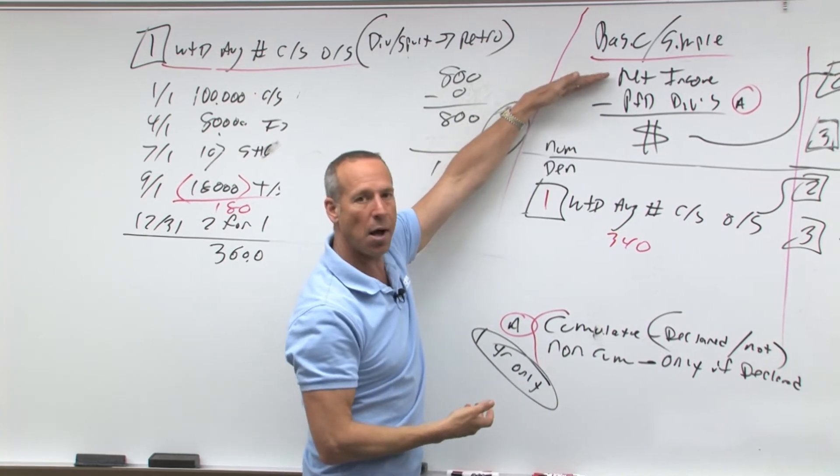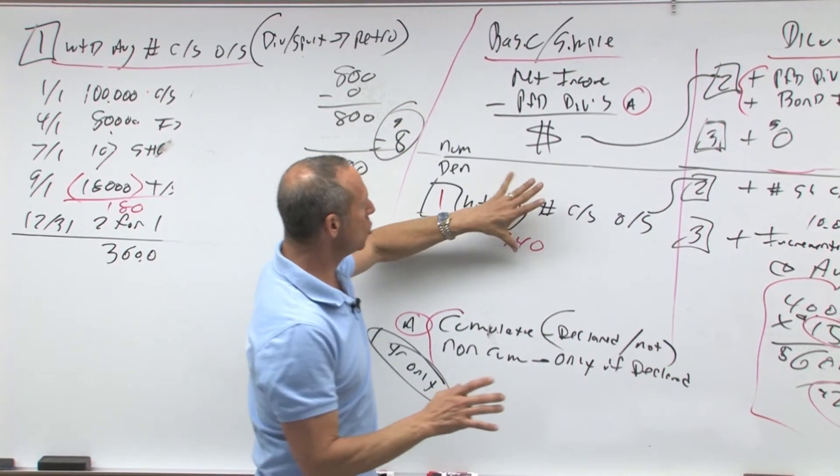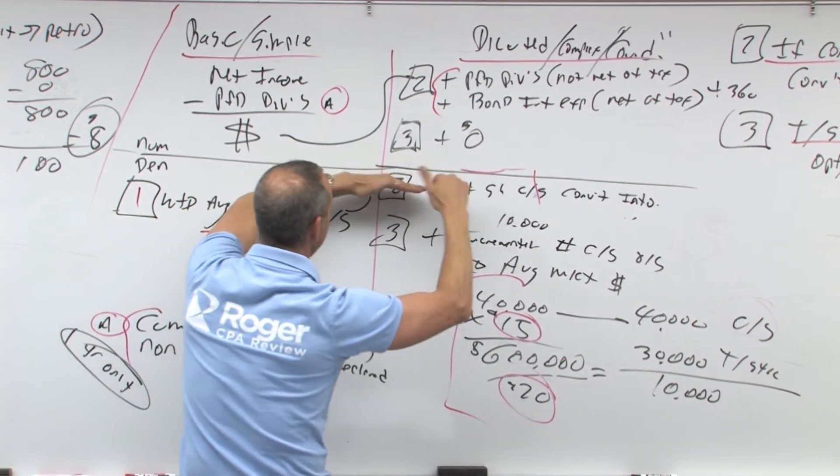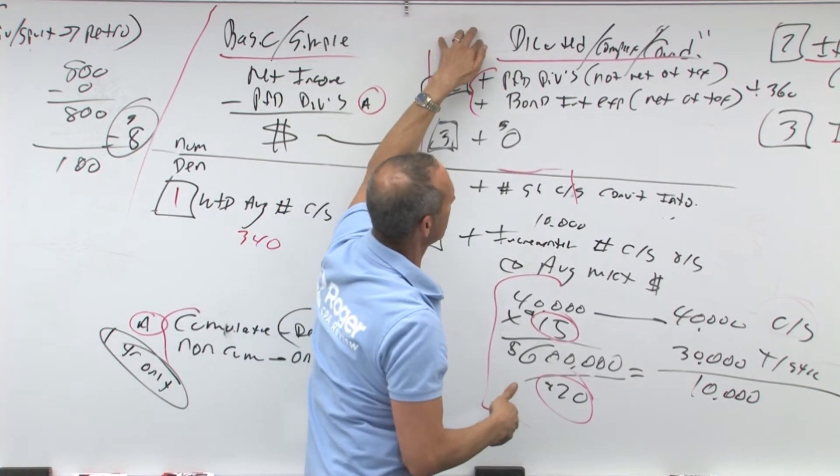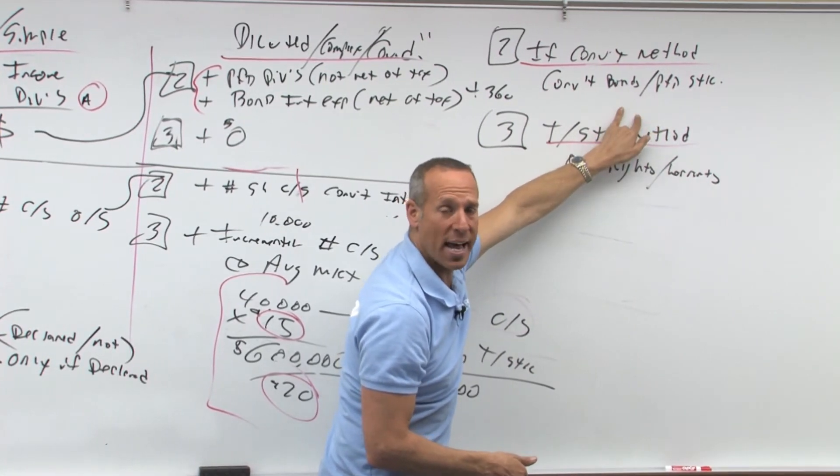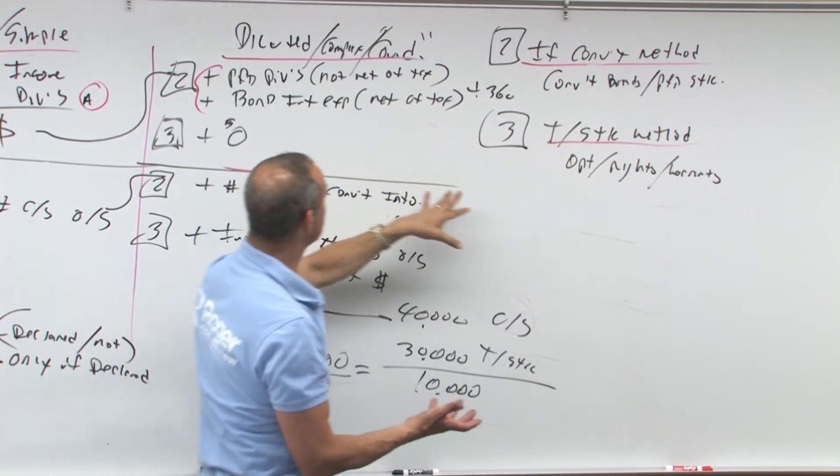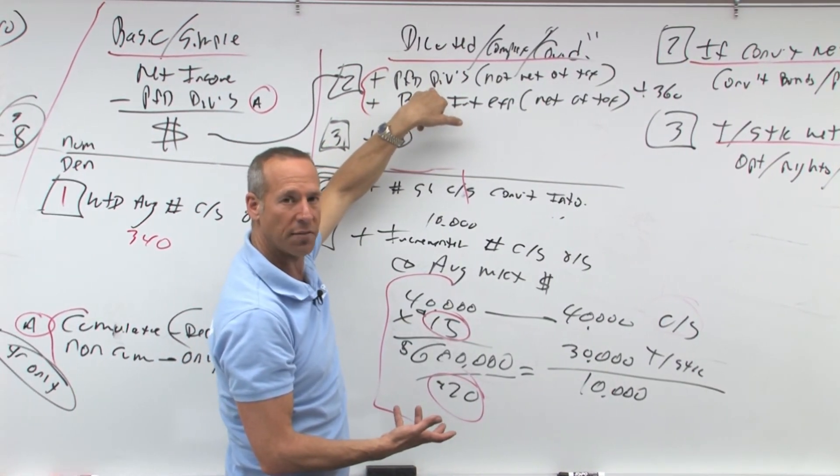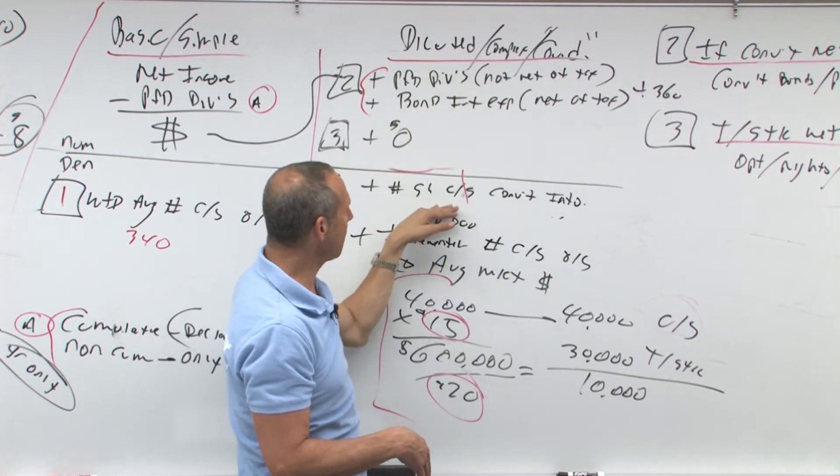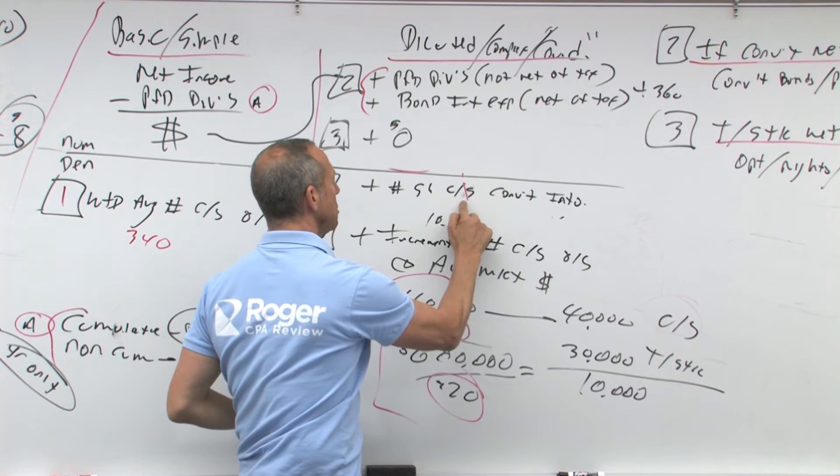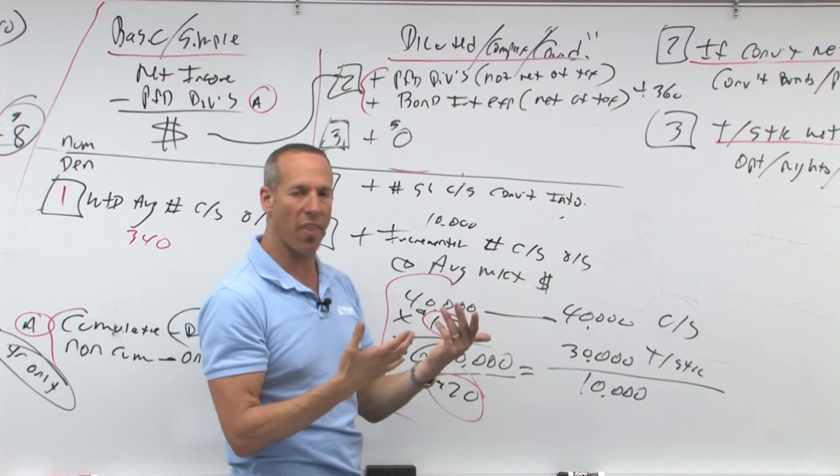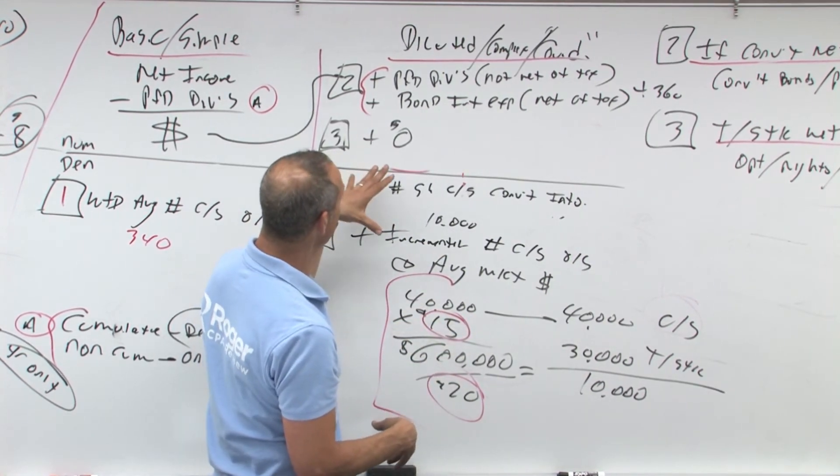So we take our net income minus preferred is the dollars divided by that. You then take this number, bring it over and adjust it by two numbers. You take this, bring it over, adjust it by two. The first adjustment is called the if converted method. The if converted method is for convertible bonds, convertible preferred stock. What does it say? It says if you convert, what would happen? If it's preferred, you wouldn't have to pay it, add it back in, not net of tax. If it's bonds, add it back in, net of tax. In the denominator, add in the number of common stock shares that it was converted into and usually they will tell you that or you have to calculate it, but it tells you the preferred converted to this, the bonds converted to that. Then in the denominator, number of shares.